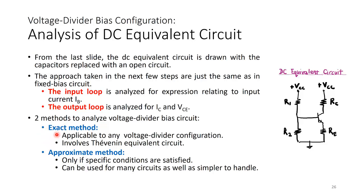The exact method is applicable to any voltage divider configuration without restrictions, but it involves finding the Thevenin equivalent circuit of the input loop, because the input loop now has an additional R2 alongside R1 and RE. The approximate method is simpler, but can only be applied if specific conditions are satisfied. It is always good to check, because if those conditions are met, the analysis will be much simpler.